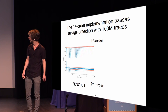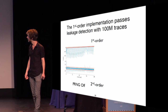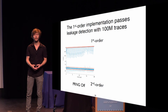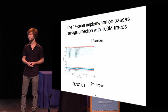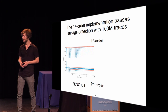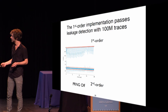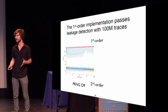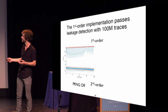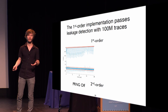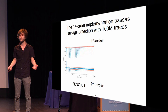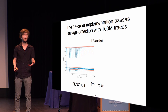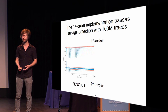When we apply this to our implementation, we first apply it with masks off as a sanity check. What we see is clear leakage in both the first order and the second order — but that's to be expected since we do not refresh and our masking scheme is not working properly.